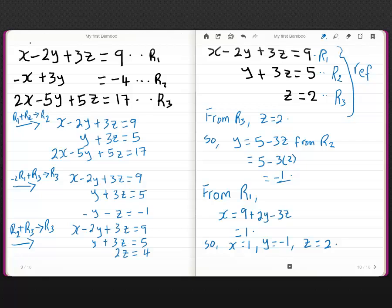Now I want to get rid of this x right here. So I add row 1 and row 2. That would give me a 0 right here. My target is x. So I add row 1 and row 2 and leave my answer in row 2. That gives me row 1 exactly as it is. And the new row 2 becomes y plus 3z equals 5. And row 3 stays exactly the same.